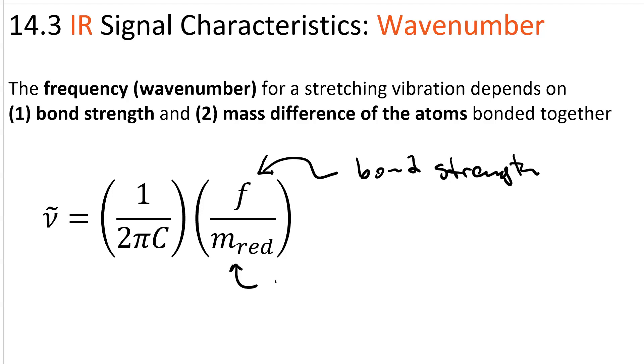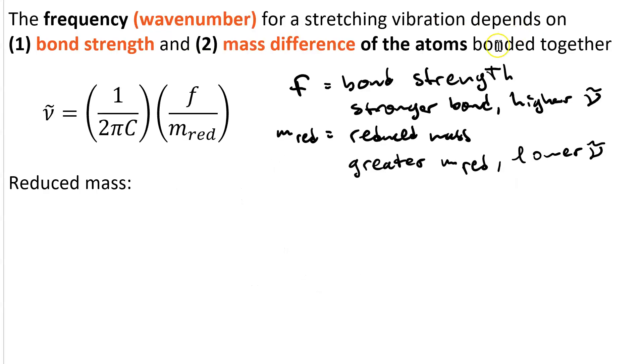M red is the reduced mass. So looking at this equation, F is bond strength and it's in the numerator. That means a stronger bond gives you a higher wavenumber.